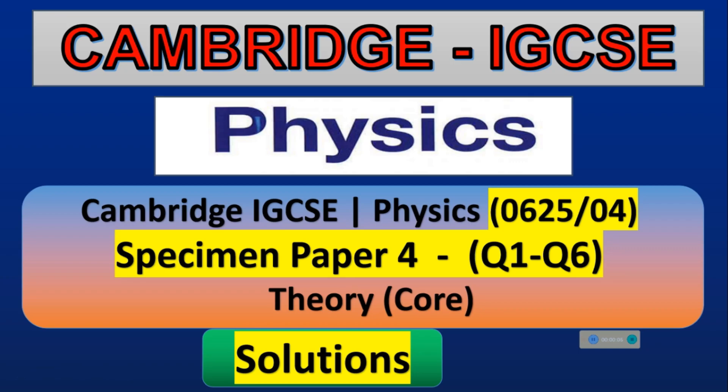Hello students, in this video we will solve specimen paper 4, physics Cambridge IGCSE paper code 0625.